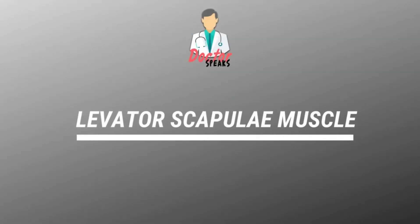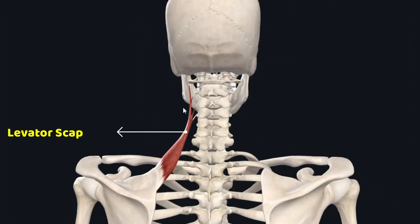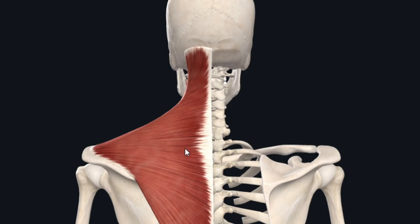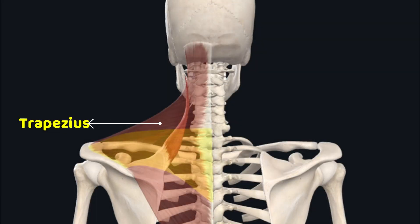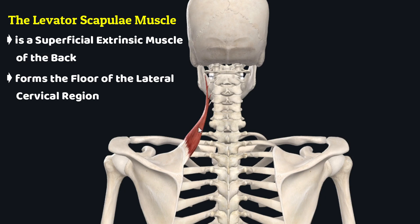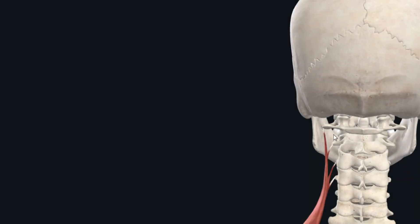Welcome back. Today we are going to study another superficial extrinsic muscle of the back: the levator scapulae muscle. The levator scapulae is a thin, stripe-like muscle found in the lateral cervical region of the neck. This muscle lies deep to the trapezius muscle. The levator scapulae is a superficial extrinsic muscle of the back and forms the floor of the lateral cervical region.